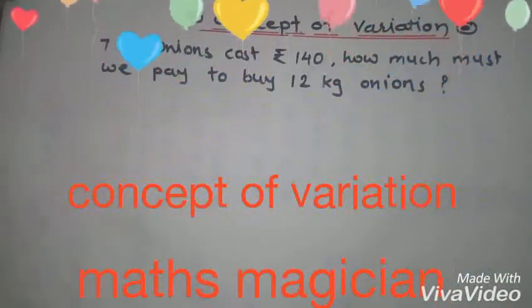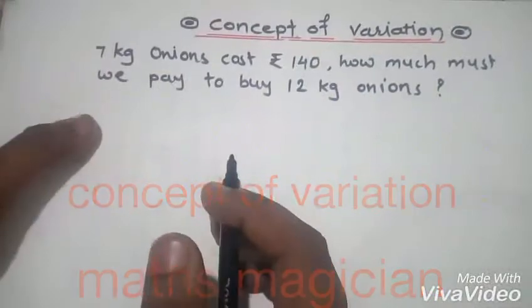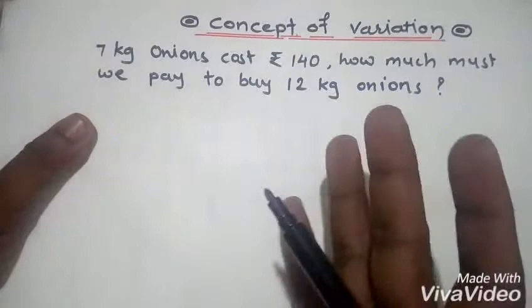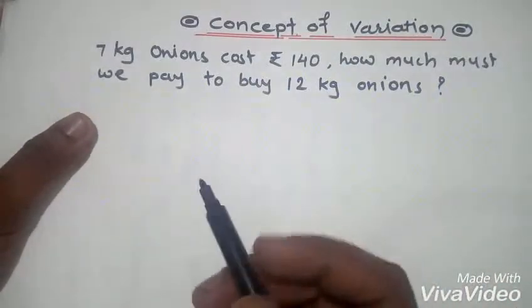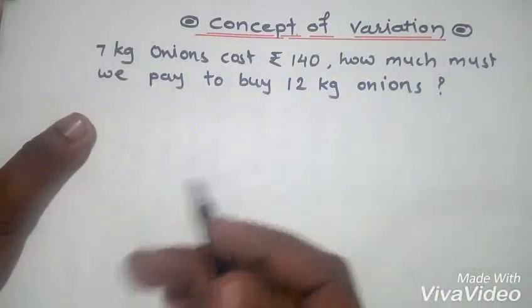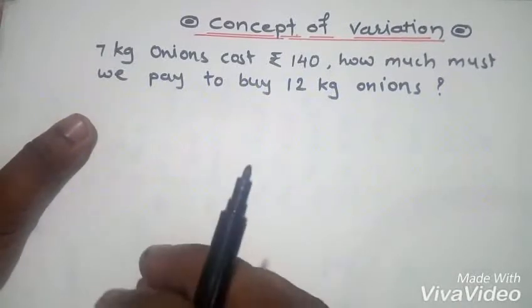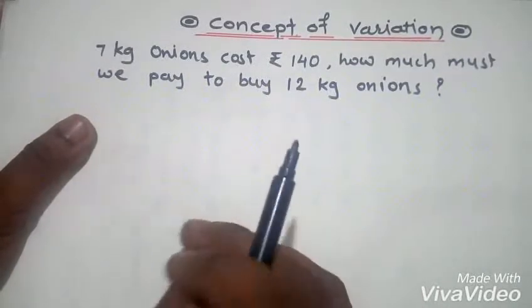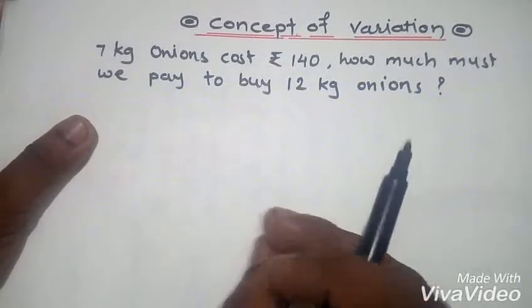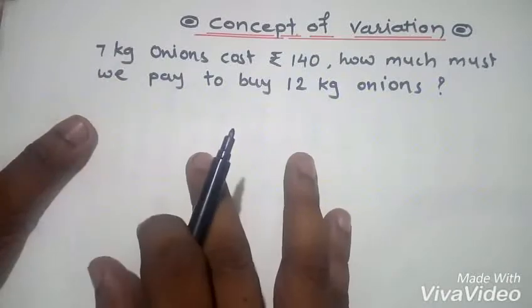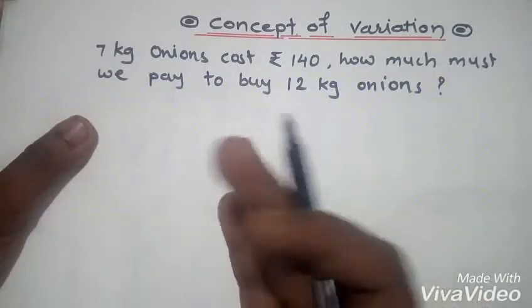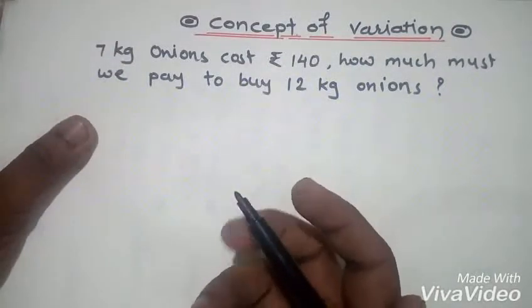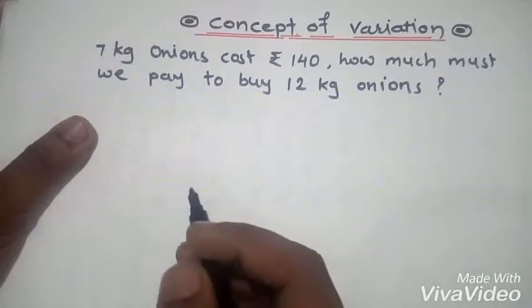Hello guys and welcome back. Today you are here with Max Magician and we will try to figure out how to understand variation. We all know that there are two types of variation: direct variation and inverse variation. Variation means changes. If the changes seen in two quantities are the same, it is direct variation. If the changes are opposite, it is called inverse variation.